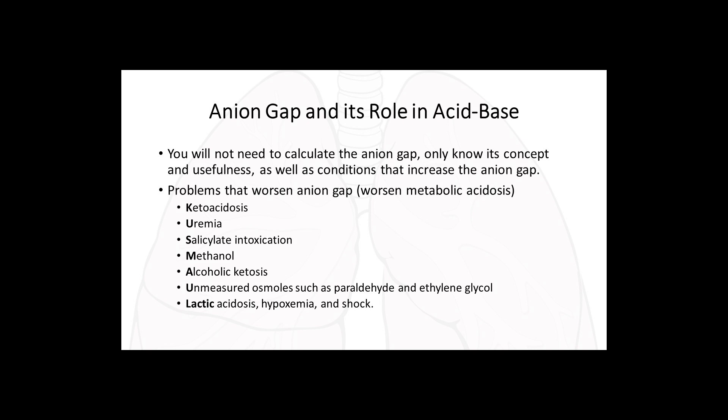Conditions that increase the anion gap include ketoacidosis, uremia (elevated BUN), salicylate intoxication (aspirin), methanol ingestion, alcoholic ketosis, unmeasured osmols such as paraldehyde and ethylene glycol (which can occur in poisoning), and lactic acidosis related to hypoxemia and shock.